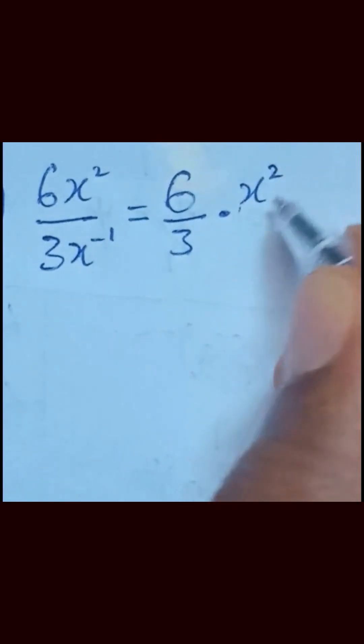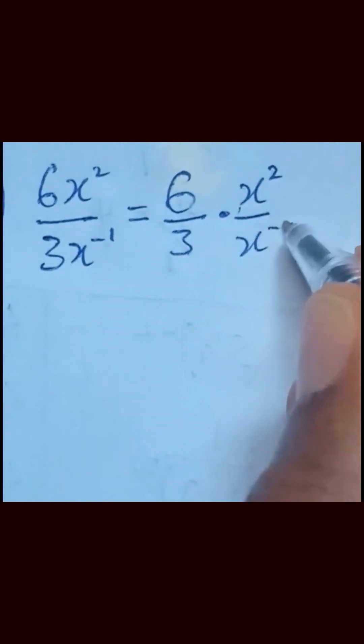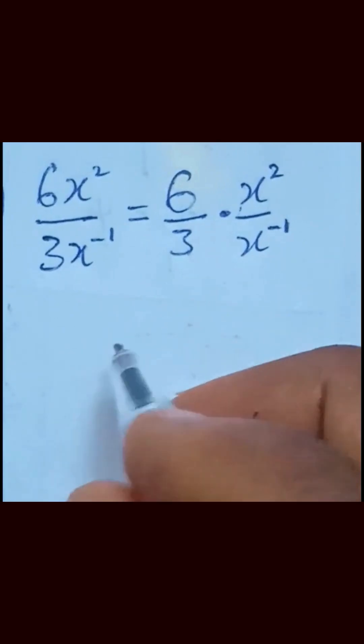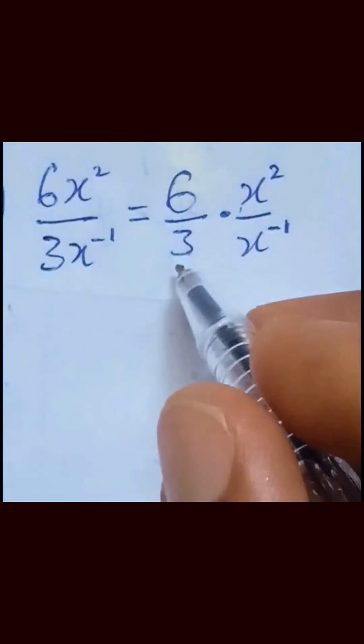If you are not careful, this can be tricky. Just take it as 6 over 3, then multiply by x power 2 over x power minus 1. From here, you now simplify this.